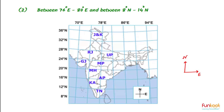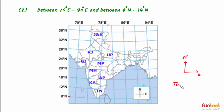For the second part, we have to find the state completely lying between 76 degrees east and 80 degrees east, and between 8 degrees north and 14 degrees north. Extending these lines on the map, we can see that Tamil Nadu is the state which lies completely between these latitudes and longitudes. So the second answer is Tamil Nadu.